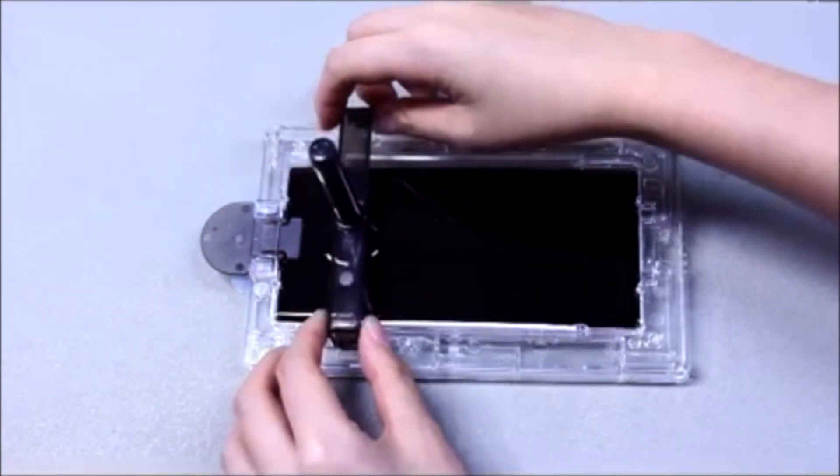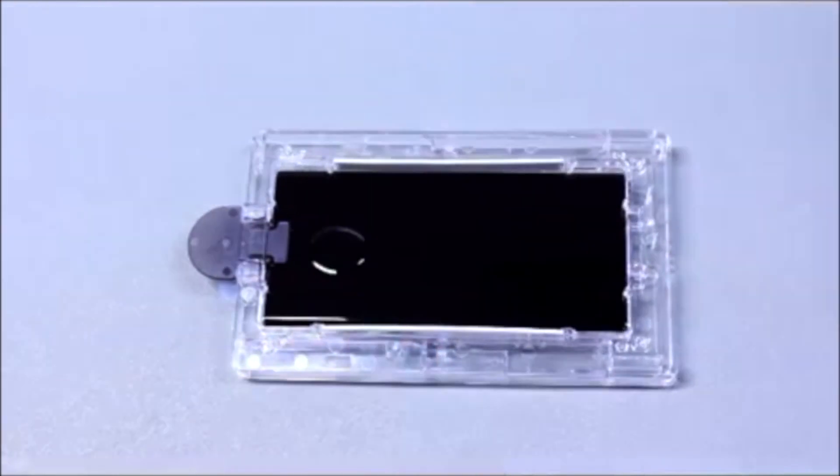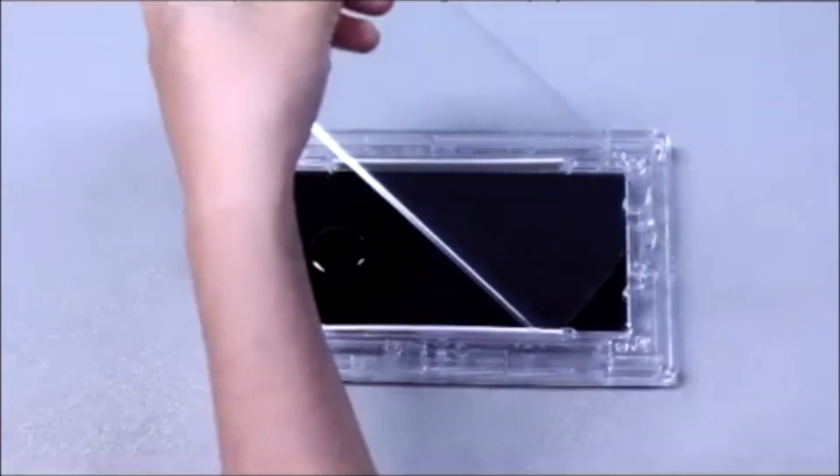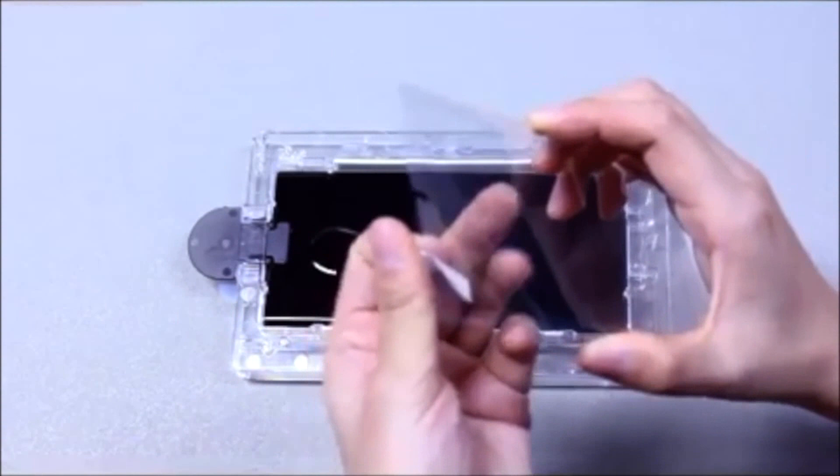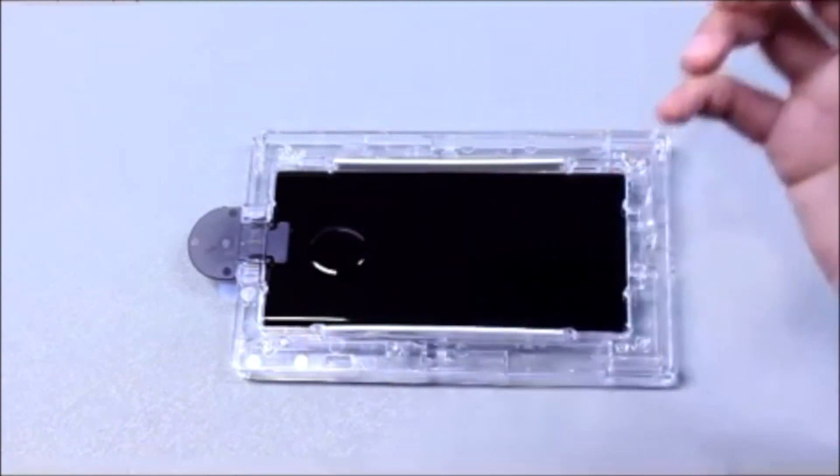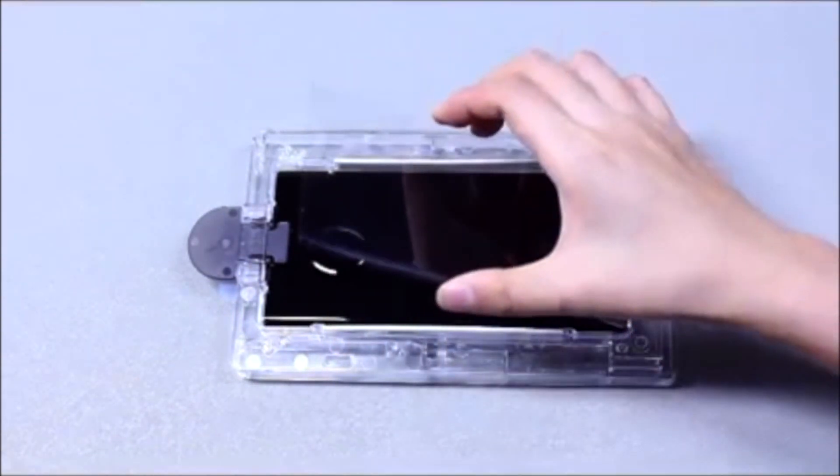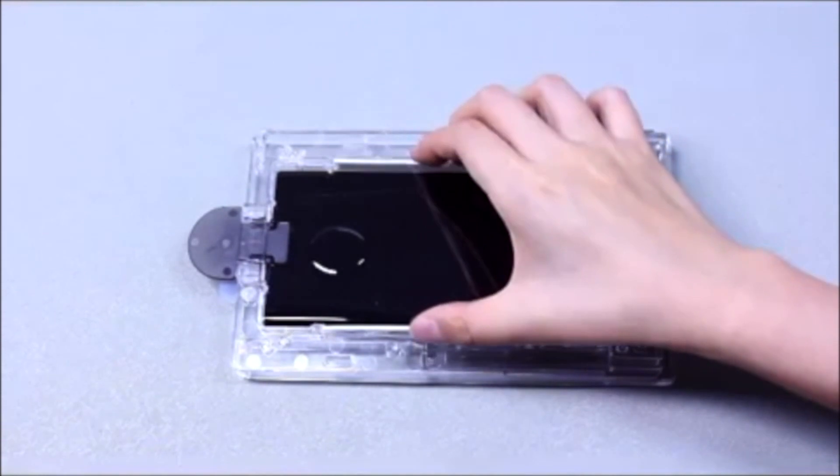Once all the adhesive has been poured out, remove the bridge. Next, carefully remove the peel off sheet from the glass by peeling down and place the glass in the tray. Start at the bottom and carefully lean it onto the pin.